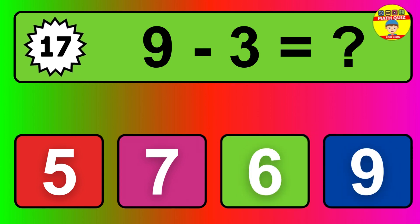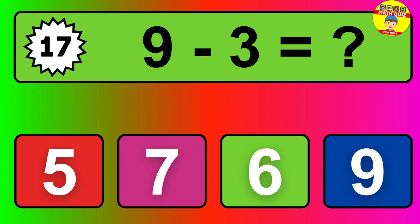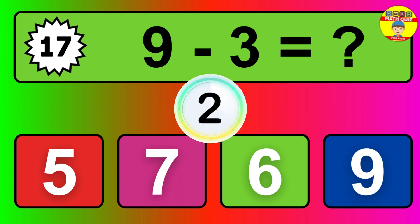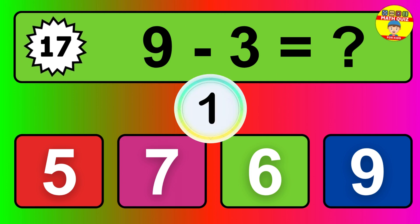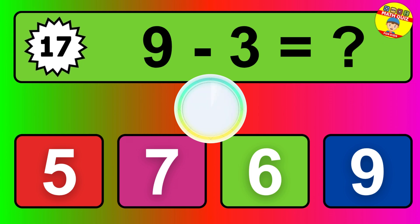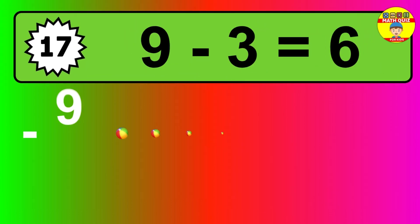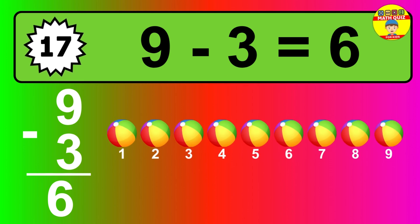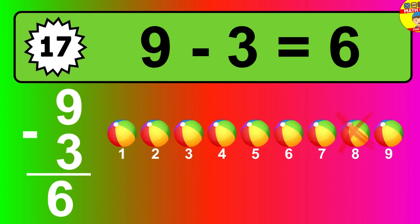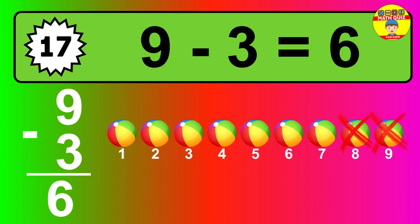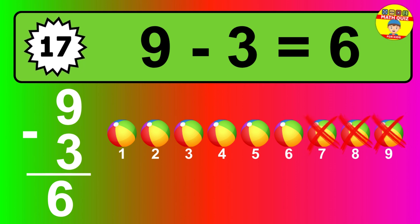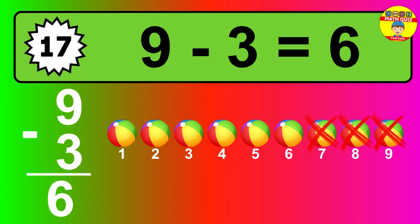Question 17. 9 minus 3 equals what? So the answer is 9 minus 3 is 6. Let's count it: 1, 2, 3, 4, 5, 6.